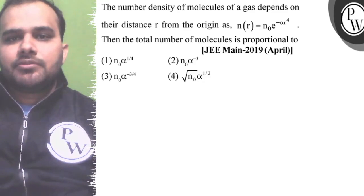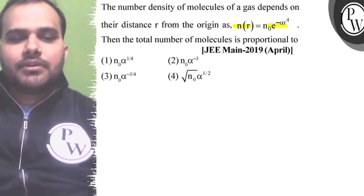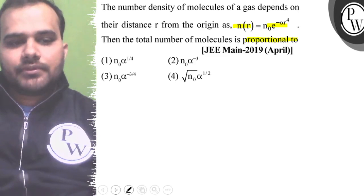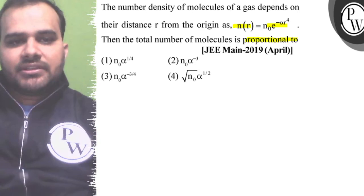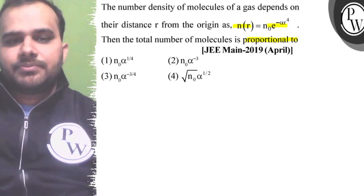The number density of molecules of a gas depends on a function that is given to you, and we have to calculate the total number of molecules. If we consider that the molecules are in a spherical shape, we can write the total number of molecules.